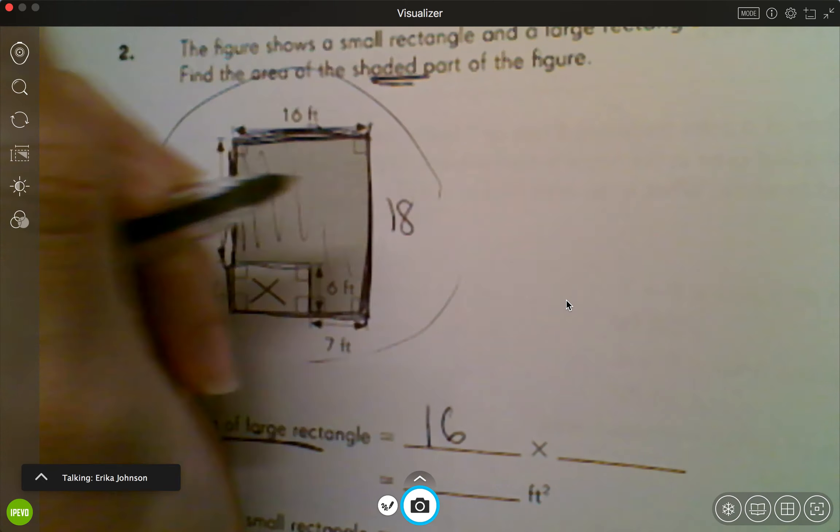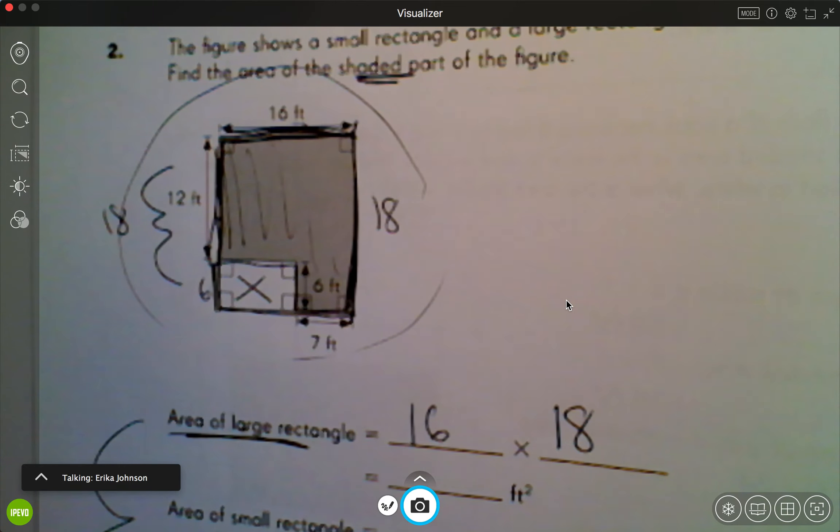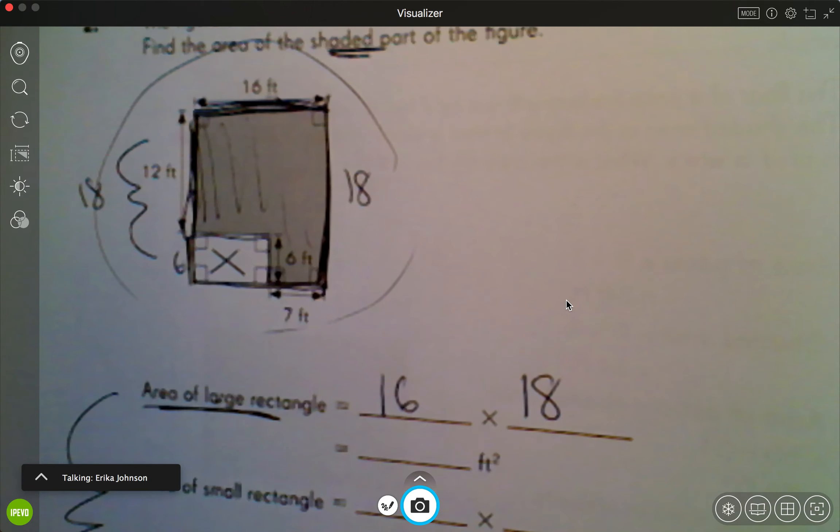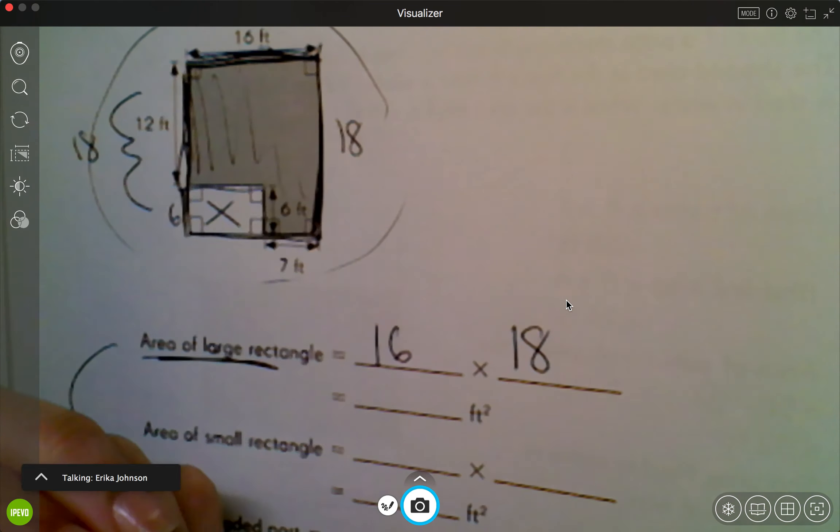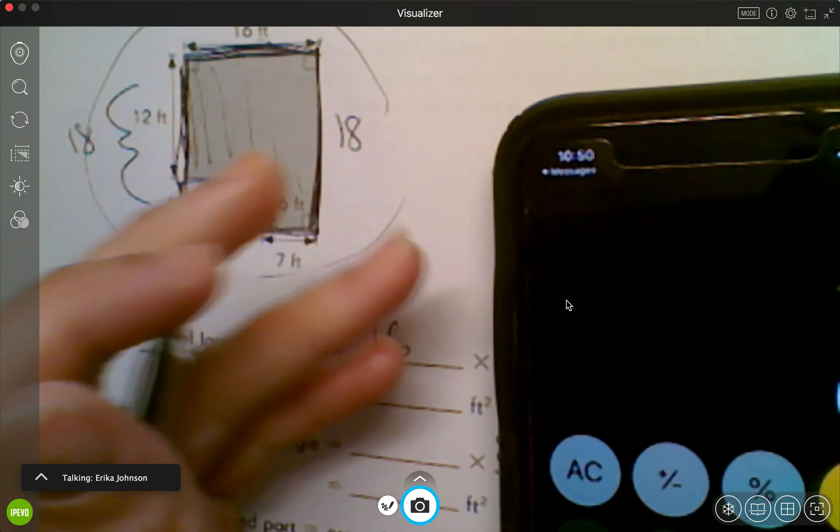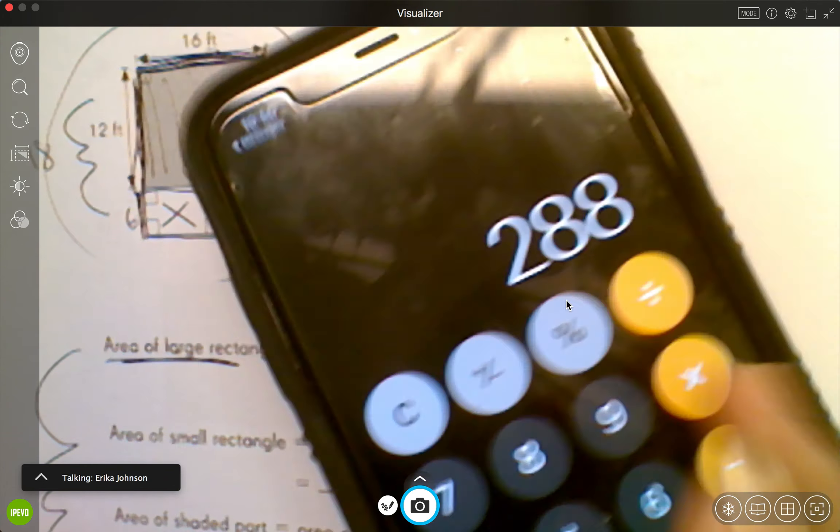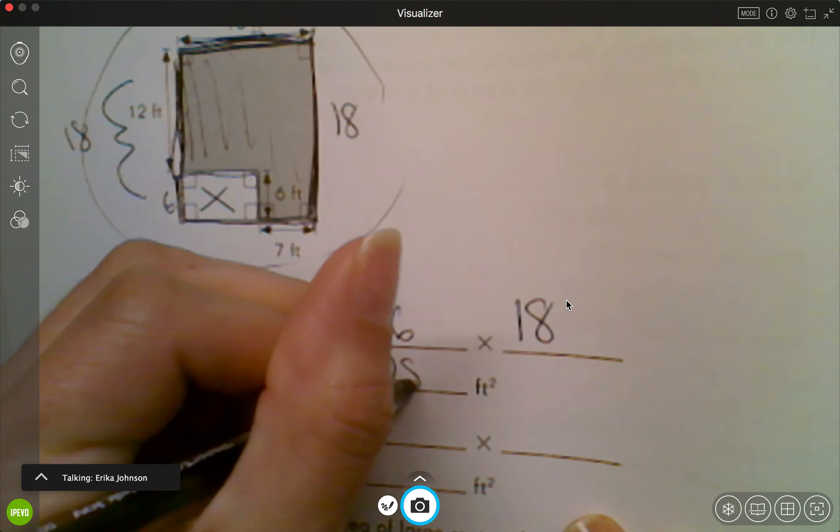So I'm doing 16 times 18. You can use a calculator for this, but you can also solve it on the side. So just to speed things up a little bit so this video isn't forever long, I'm gonna just do 16 times 18 and I got 288. So I know that the area of this entire thing is 288 feet squared.